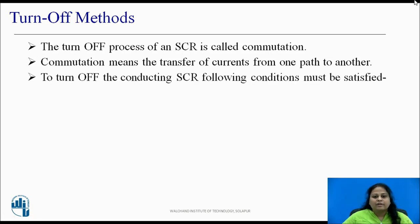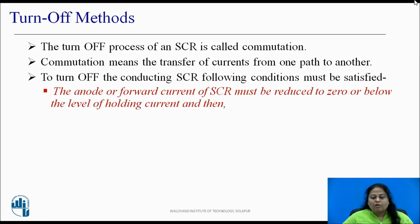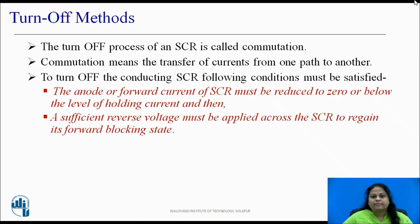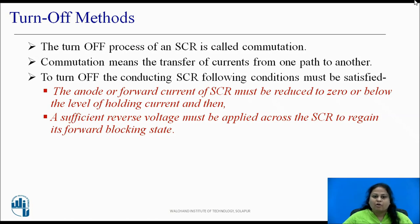In order to turn off the SCR, the following conditions must be satisfied. The anode or forward current of SCR must be reduced to zero or below the holding current. And a sufficient reverse voltage must be applied across the SCR to turn it off. This is done because even after the SCR is turned off by reducing forward current to zero, there still exist some charge carriers in different layers which keep the SCR turned on. To avoid this, these excess carriers must be recombined, and this is done by applying a reverse voltage across the SCR.